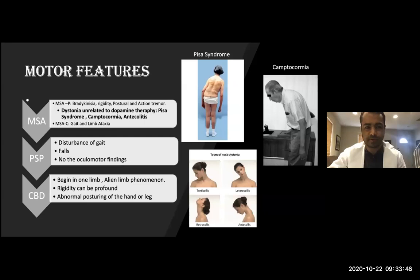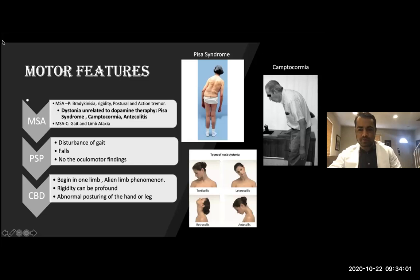For MSA features, we have dystonias, especially in the parkinsonian type. The most common dystonia is the Pisa syndrome — like the Italian leaning tower of Pisa — where the patient is bent forward. In PSP, the main problems are falls, gait disturbance, and ocular findings: when you ask them to look up, they have this supranuclear palsy.